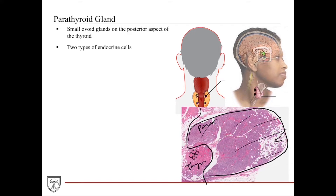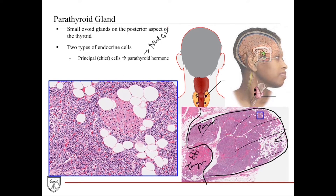The parathyroid has two types of endocrine cells. One is called the principal cells, also called the chief cells — not to be confused with the chief cells of the stomach glands. The principal or chief cells of the parathyroid gland secrete parathyroid hormone, or PTH, which regulates bone tissue mineralization and has an effect of increasing blood calcium level. At a higher magnification, the principal cells are regularly shaped and sized circular cells with pale to basophilic staining cytoplasm. The other type are the oxyphil cells — slightly larger cells with eosinophilic staining cytoplasm.